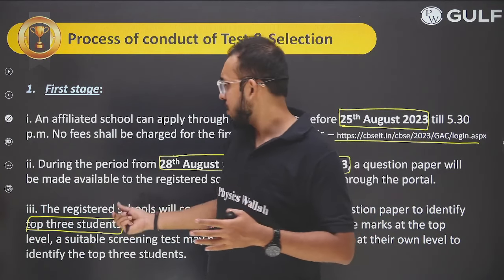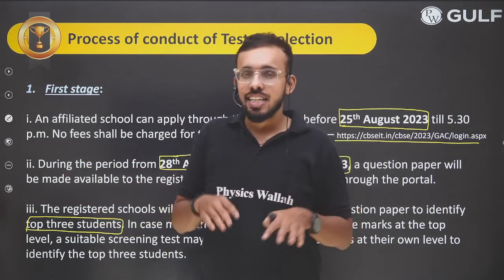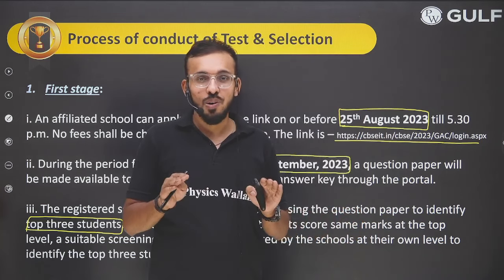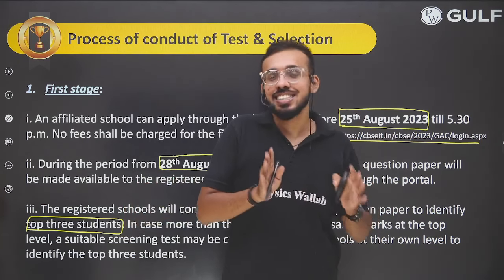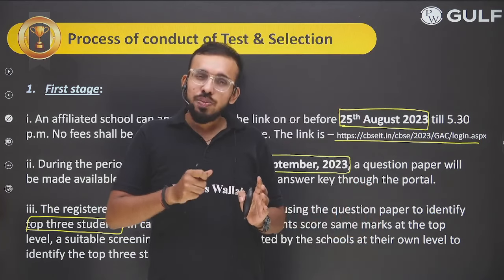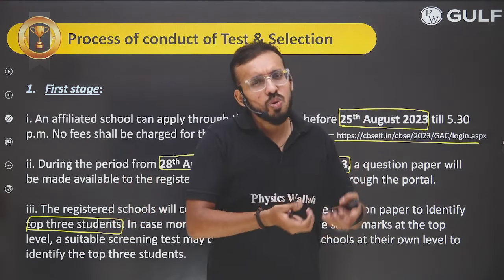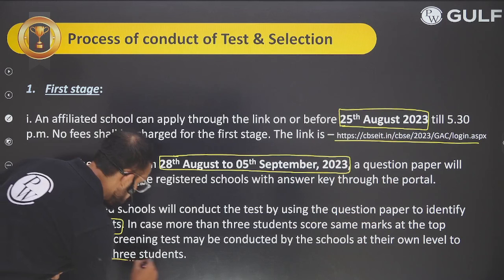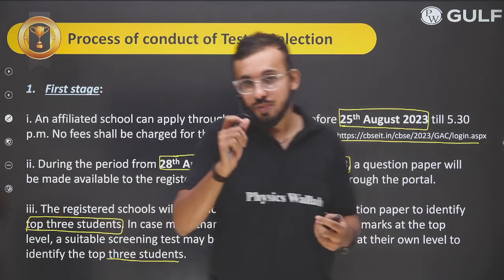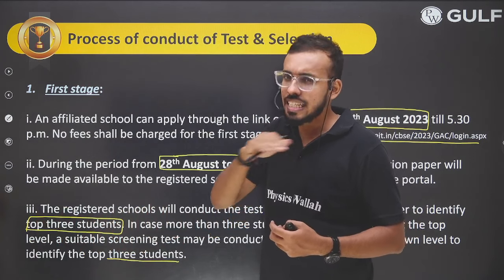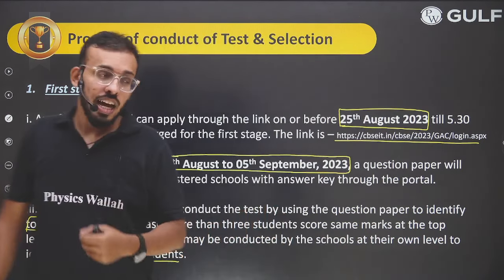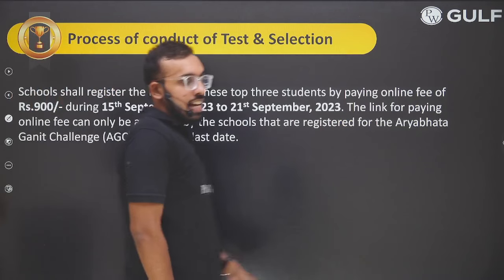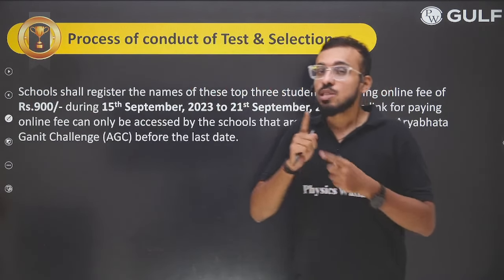The top three scoring students will be shortlisted for the next round. If there is a tie — for example, if five students get the same marks — the school will conduct a screening round, perhaps an interview or another test, and again only three students will be selected. Otherwise, the top three go directly to Level 2.